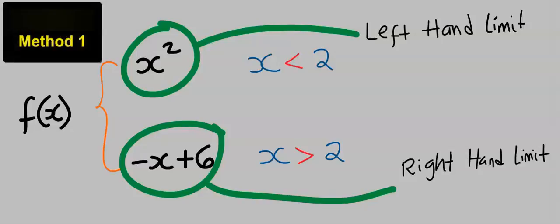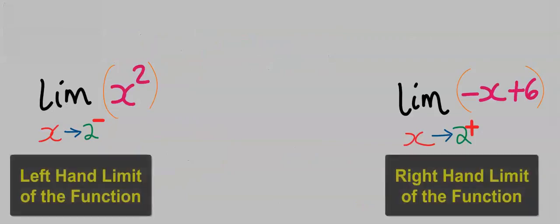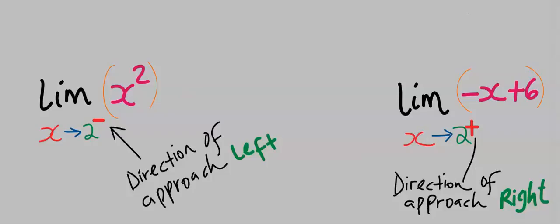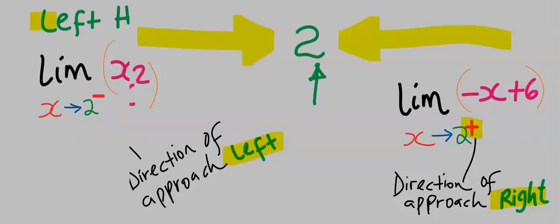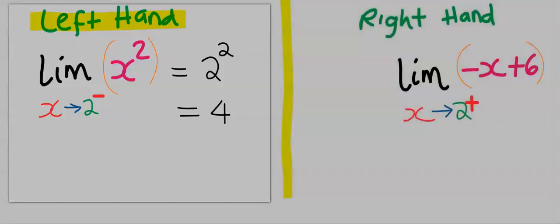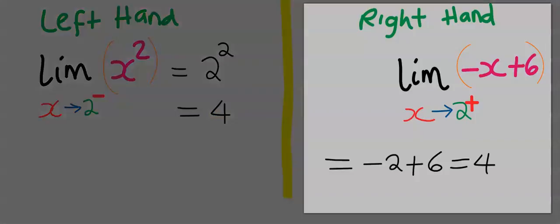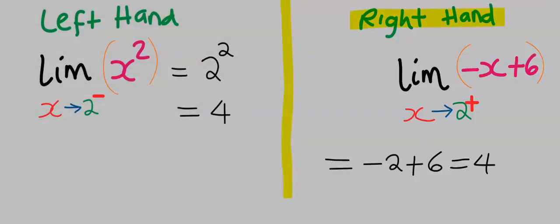We can split the left-hand limit and the right-hand limit, showing the direction of approach towards 2. The negative here indicates the direction of approach from the left towards 2, while the positive indicates the direction of approach from the right towards 2. When seen on the number line, from the left-hand side, if you substitute 2 into the limit you're going to get 4. Likewise, from the right-hand side, if you substitute 2 you're going to get 4.